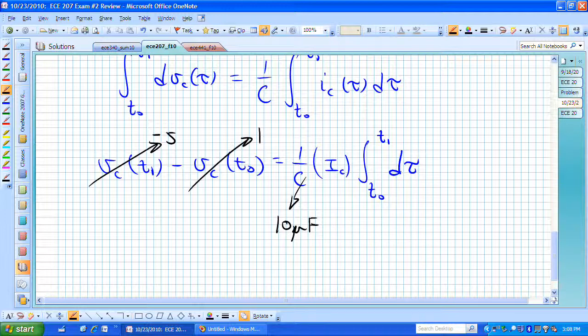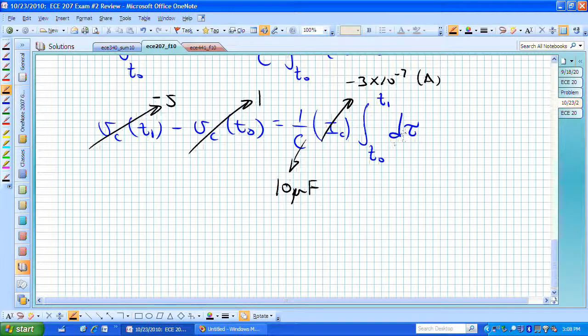And i sub c we just computed to be this minus 3 times 10 to the minus 7 amperes. And the only unknown, we're assuming that t sub 0 is 0, that's our origin in the time axis. The only thing that's remaining that's not known in this particular expression is the final time t sub 1, that it will transition from 1 volt to minus 5 volts.